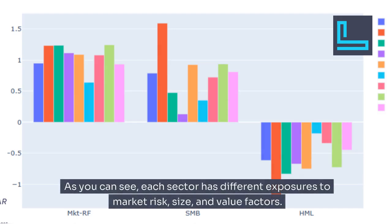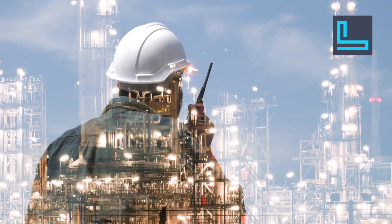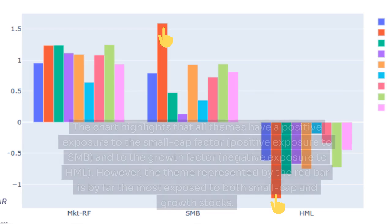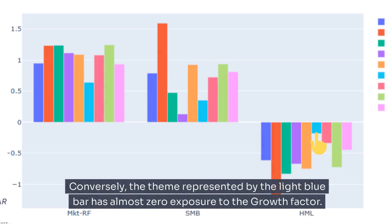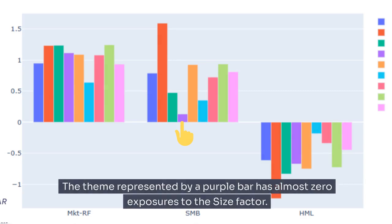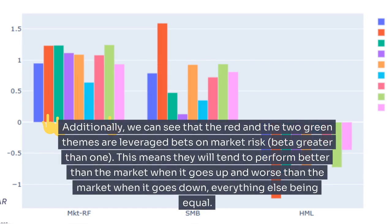As you can see, each sector has different exposures to market risk, size, and value factors. The chart highlights that all themes have a positive exposure to the small-cap factor (positive SMB) and to the growth factor (negative HML). However, the theme represented by the red bar is by far the most exposed to both small-cap and growth stocks. Conversely, the theme represented by the light blue bar has almost zero exposure to the growth factor, and the theme represented by the purple bar has almost zero exposure to the size factor.